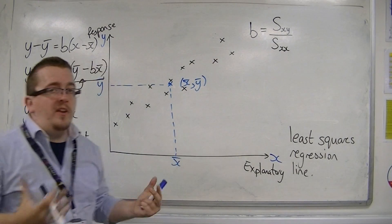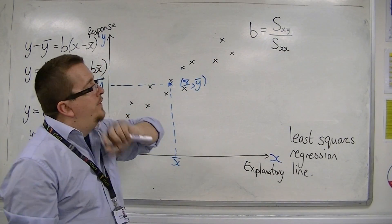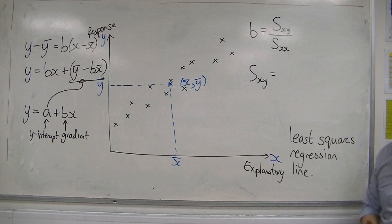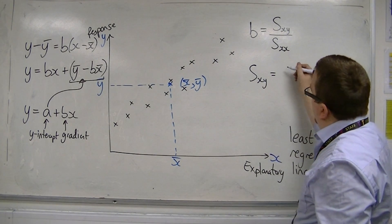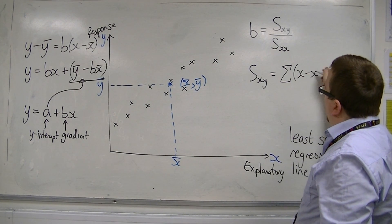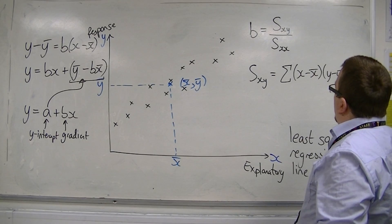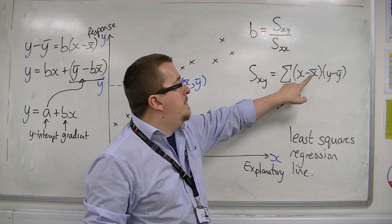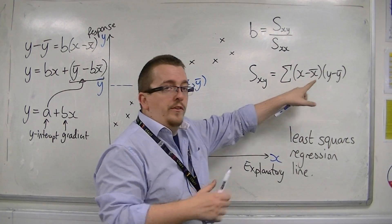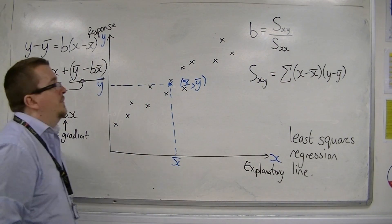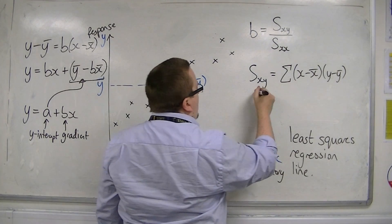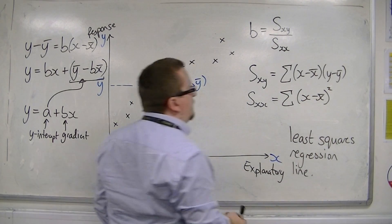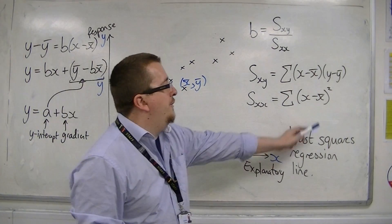This notation you will not have seen before. Sxy is given the term of the covariance, and that is the sum of (x minus x-bar) times (y minus y-bar). So I subtract the mean from each of the y-coordinates, subtract the x mean from the x-coordinates, multiply them together, and add all of them up. Sxx is the sum of (x minus x-bar) squared — it's almost the variance, but I'm just not dividing through by n.